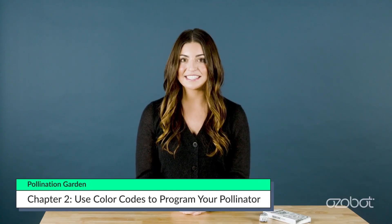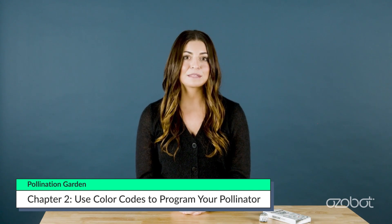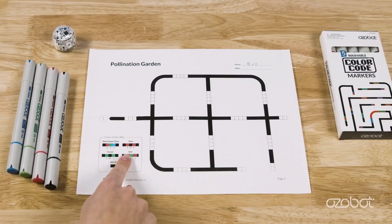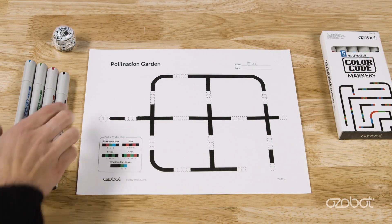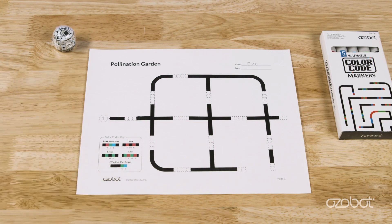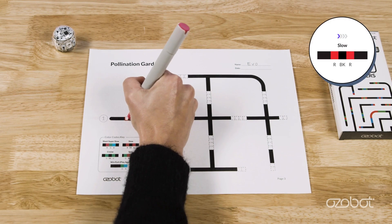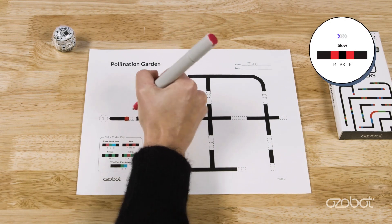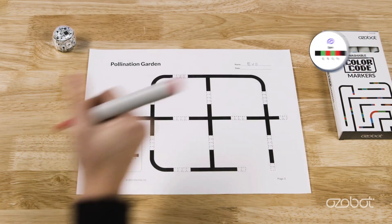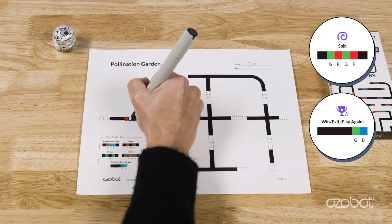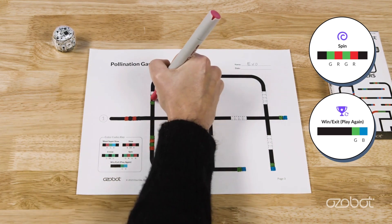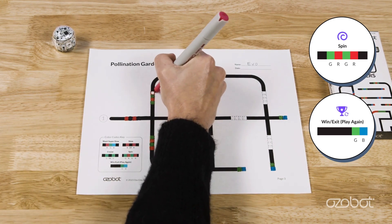Let's create your interactive model. You will begin with the pollination garden map containing multiple pathways for your bot to travel, with 14 missing color codes. In the bottom left of the map is a color codes key to help you program your bot to act like a pollinator. The first missing color code will be the slow color code. The other missing color codes will be spin or win exit play again. Use your color code markers to complete each sequence of empty boxes and complete the pathways for your pollinator.